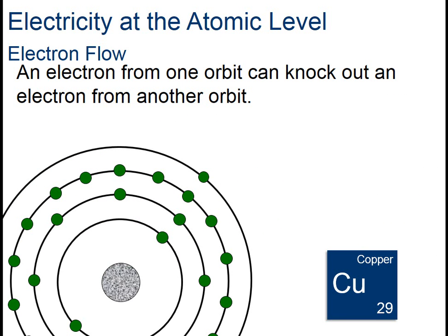The amount of current generated by an atom is based on the number of electrons in the valence shell. Some elements hold their electrons tightly, making it an insulator. Generally, when 5 to 8 electrons occupy the outer ring, the material will be an insulator of electricity.